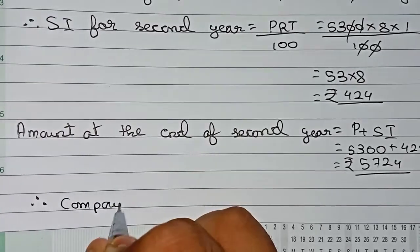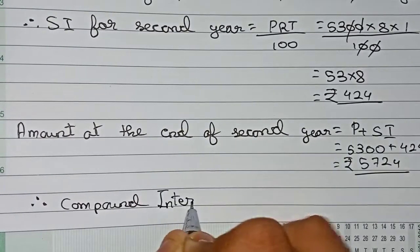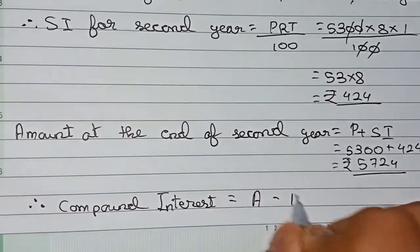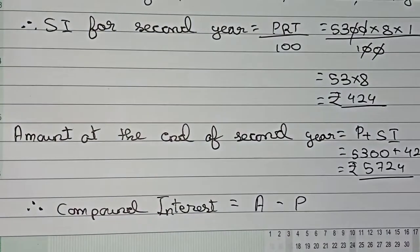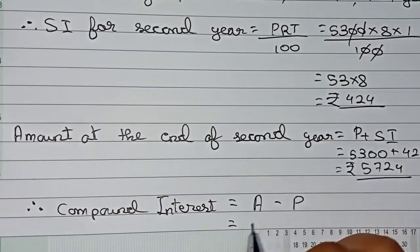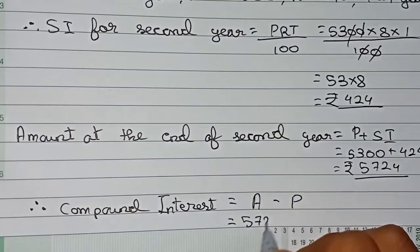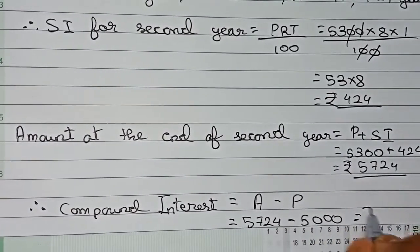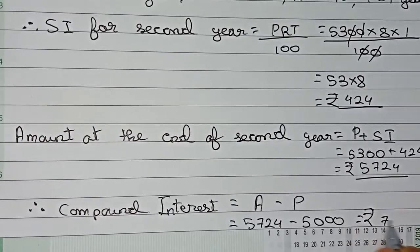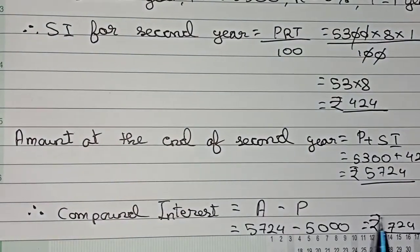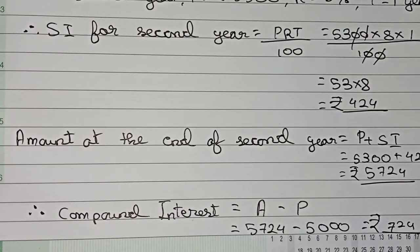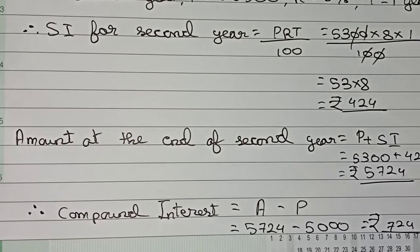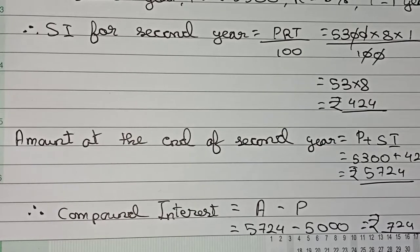Compound interest equals amount minus the original principal — the principal from which we started the question. So that is 5724 minus 5000, which equals rupees 724. Therefore our amount is rupees 5724 and our compound interest is rupees 724. This is our final answer. Thanks for watching and please subscribe to my channel for more solutions.